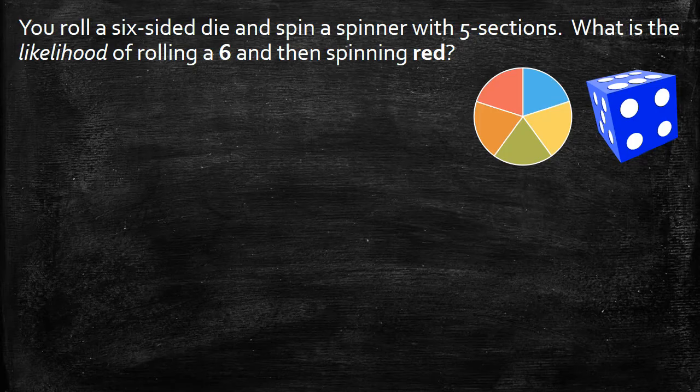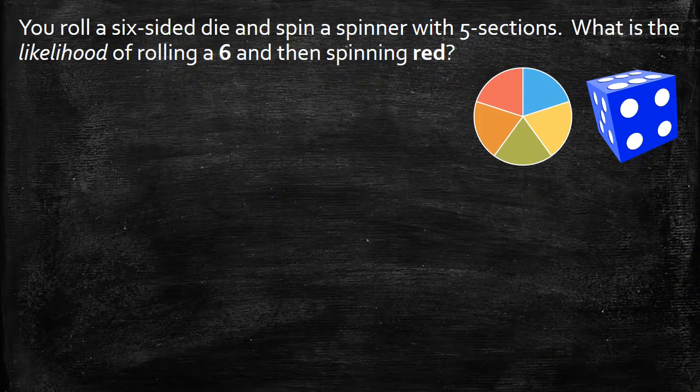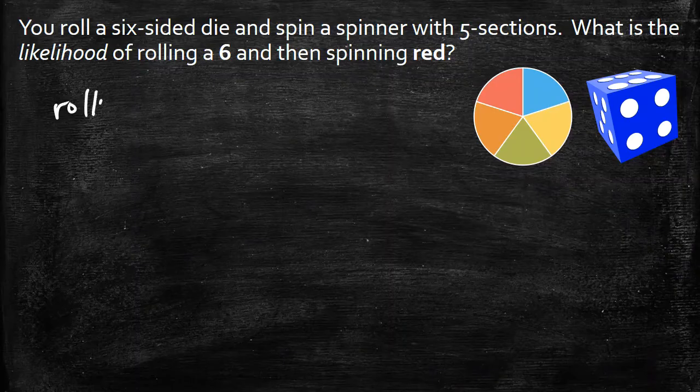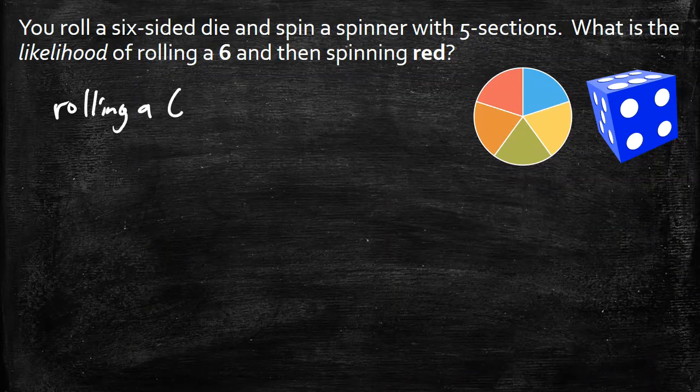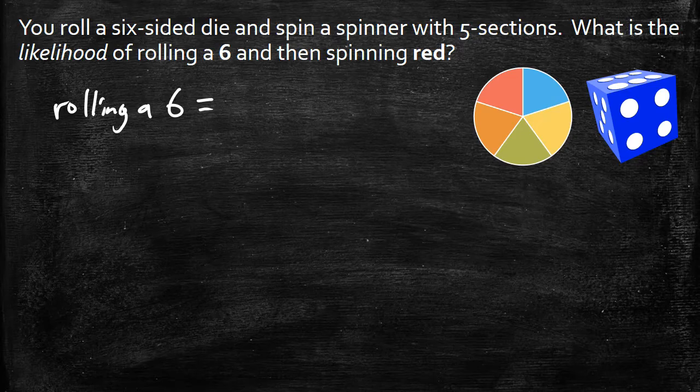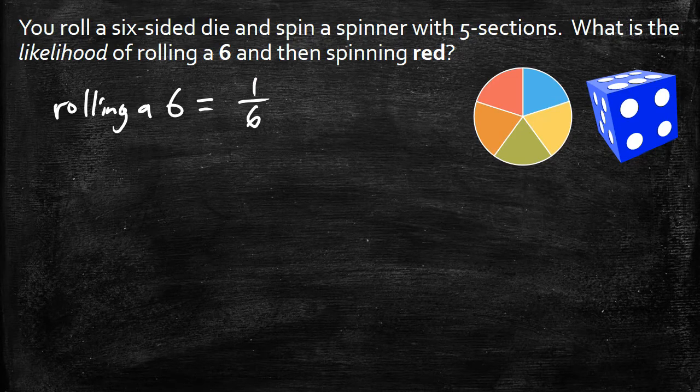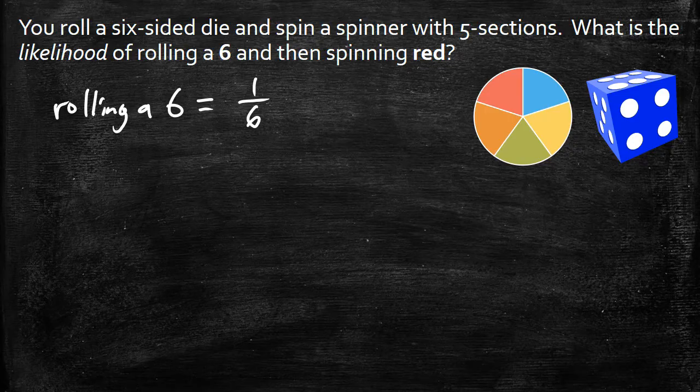So I want to take a look at what is the probability of rolling a six. So rolling a six, I know the probability of rolling a six is just going to be one out of six because there's six possible outcomes. One of those outcomes is a six.